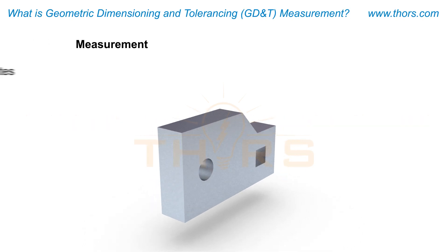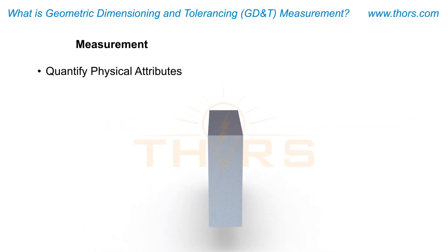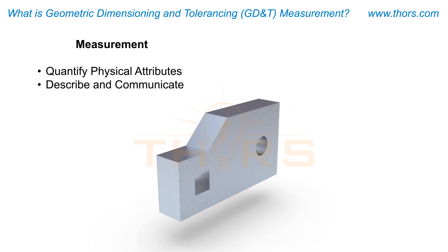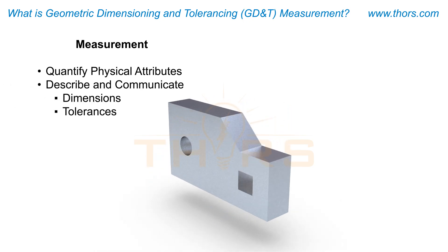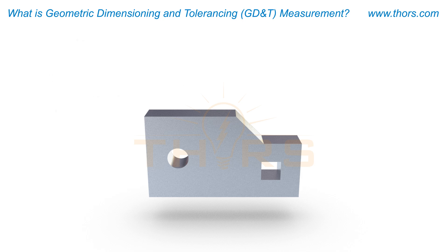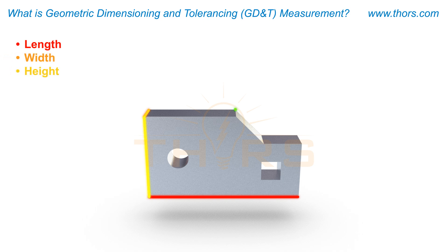Measurement is the process of quantifying physical attributes that help to precisely describe and communicate the dimensions and tolerances of engineered parts. The purpose of measurement is to provide information on a part's dimensions, such as length, width, height, and angles, and geometric dimensioning and tolerancing, or GD&T, characteristics to achieve design requirements.